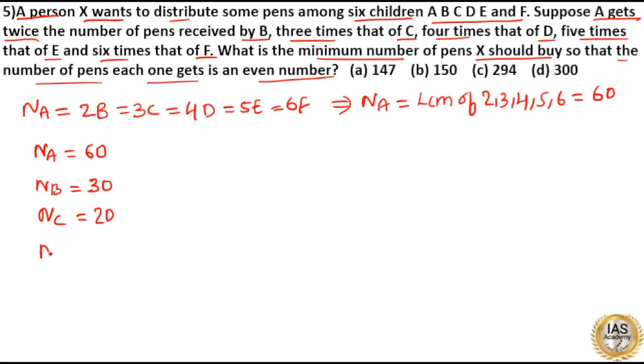Number of pens with D is 1 fourth of 60 which is equal to 15 and this is an odd number.